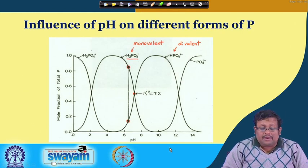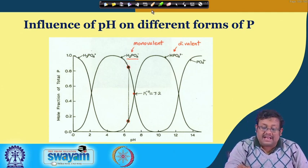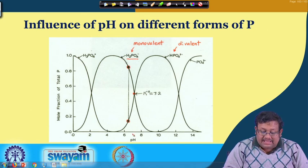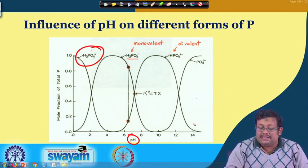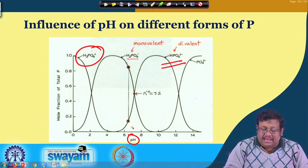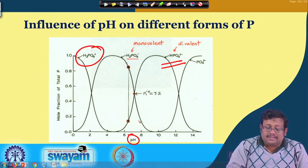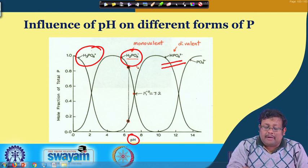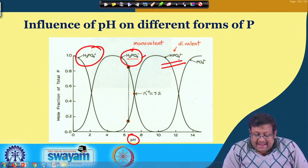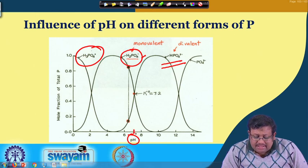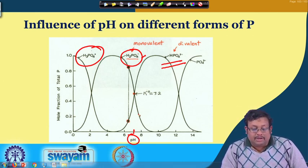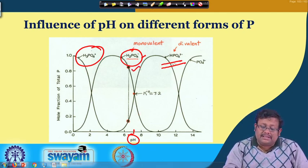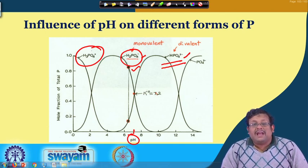Looking at the influence of pH on different forms of phosphorus: at lower pH, phosphorus is mainly present as phosphoric acid form. Under alkaline conditions, it is present as a divalent form. In the available pH range of 6 to 7, it is present as H₂PO₄⁻. At around pH 7 to 7.5, H₂PO₄⁻ and HPO₄²⁻ are almost in equilibrium. These are the primary and secondary orthophosphate ions, which are available to plants.